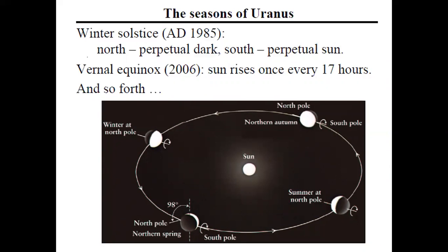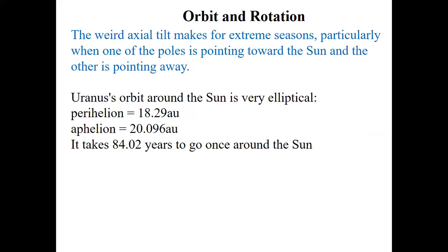Because of that high tilt, the seasons of Uranus are really long. For example, vernal equinox, the sun rises every 17 hours and so forth. I have an explanation on the slide. Let's look at that one when we come to that slide.